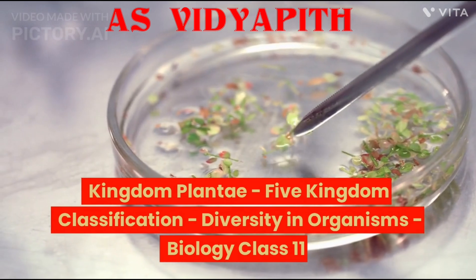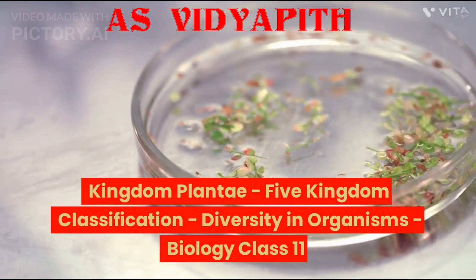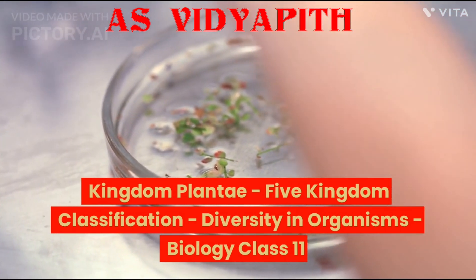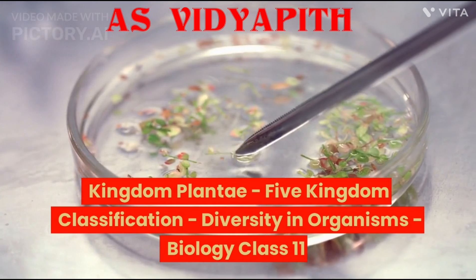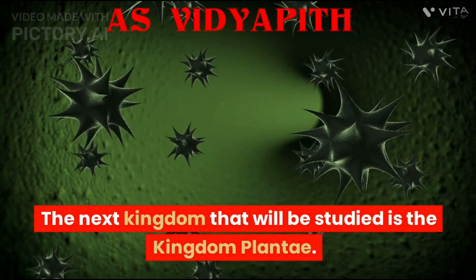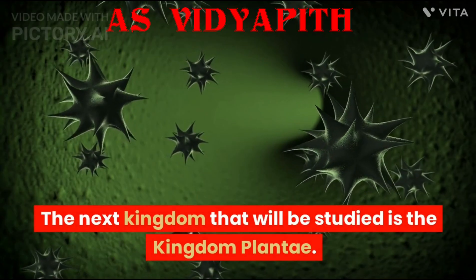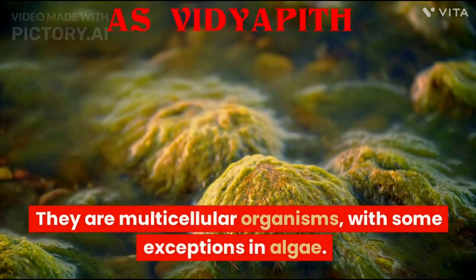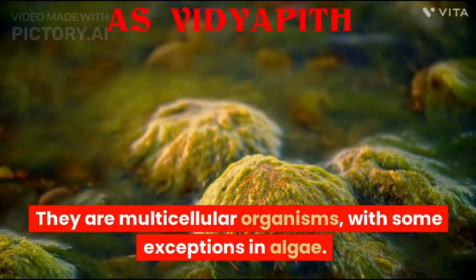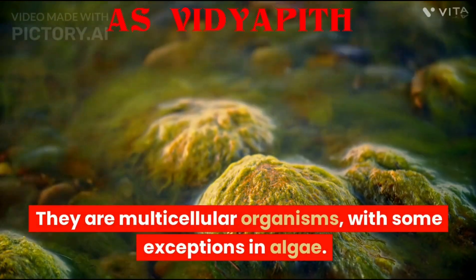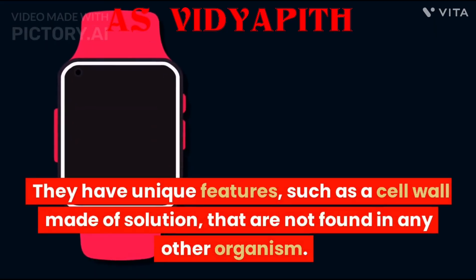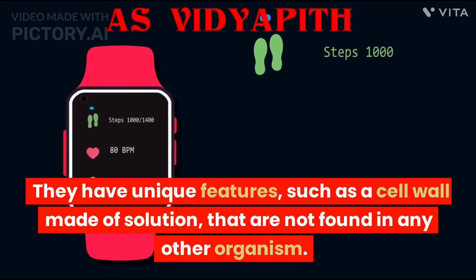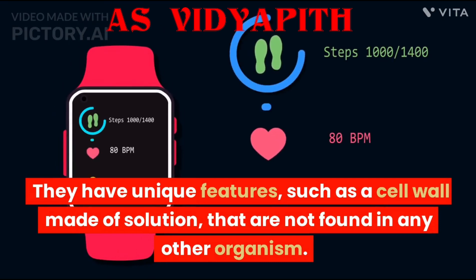Kingdom Plantae — Five Kingdom Classification, Diversity in Organisms, Biology Class 11. The next kingdom to be studied is Kingdom Plantae. They are multicellular organisms, with some exceptions in algae. They have unique features such as a cell wall made of cellulose that are not found in any other organism.